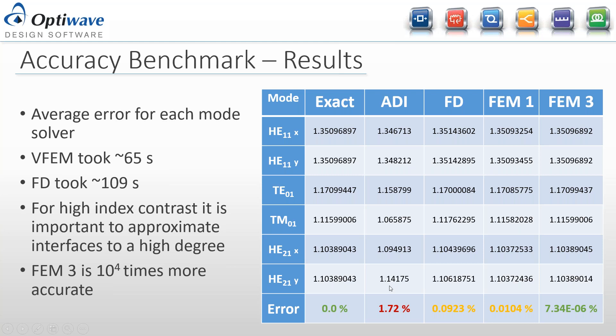The ADI method is understood to be a little less accurate for high contrast waveguides where the modes are vectorial in nature, so it's expected to have the worst accuracy. Going into this, I knew ADI would be a little less accurate, although it is pretty fast for finding modes.